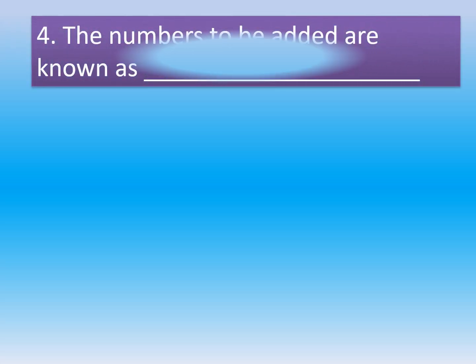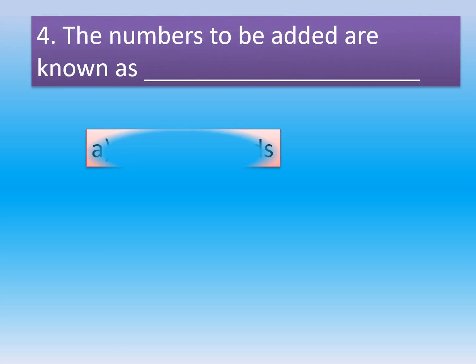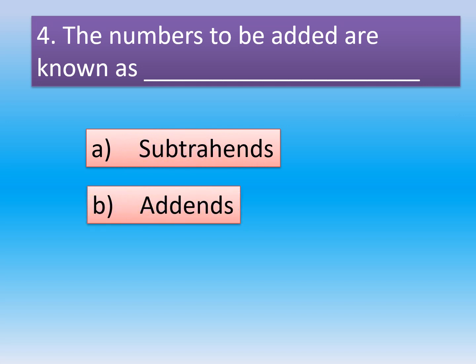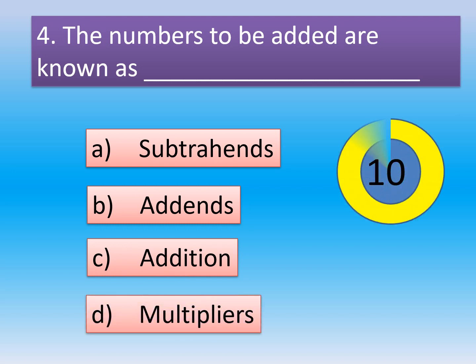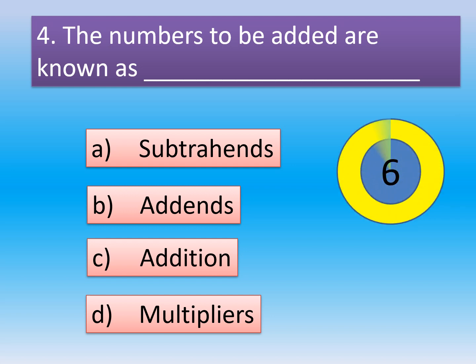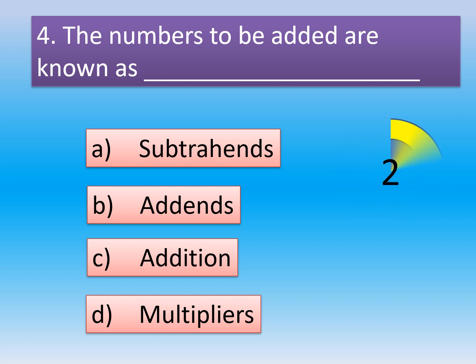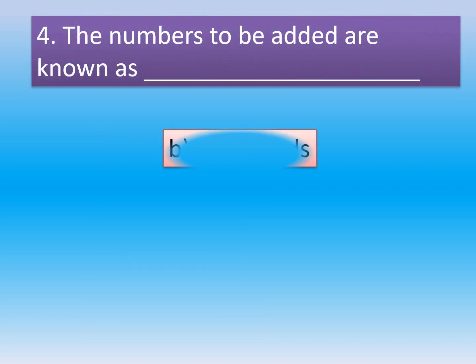Question 4: The numbers to be added are known as dash. Option A: Subtrahends. Option B: Addends. Option C: Additions. Option D: Multipliers. The correct option is Option B, Addends. The numbers to be added are known as addends.